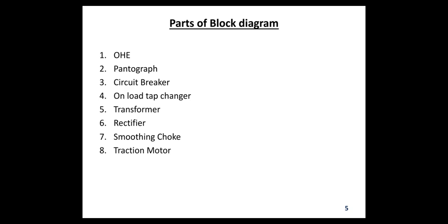Fourth is the on-load tap changer, also called the on-circuit tap changer, which regulates the output voltage of the transformer. Fifth is the transformer — a step-down transformer with tapping on the primary side is provided, and the secondary is connected to the rectifier unit. The AC supply required for auxiliary fans, lights, and batteries is directly taken from the transformer secondary. Sixth is the rectifier, which converts AC to DC supply. DC supply is needed for the DC series motor which drives the locomotive, and the output of the rectifier is pulsating DC, so a DC filter is needed.